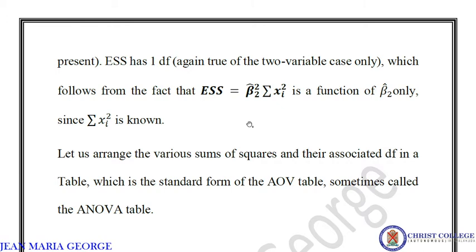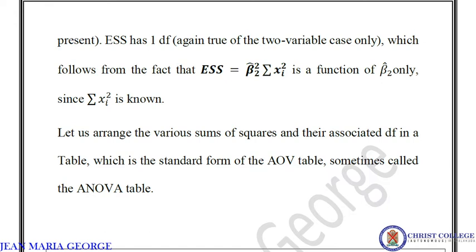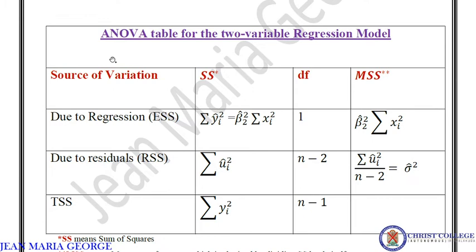The next task in the ANOVA regression model is to arrange the various sums of squares — TSS, ESS, and RSS — along with their degrees of freedom in a table. This table is called the ANOVA table, or AOV table — analysis of variance table.